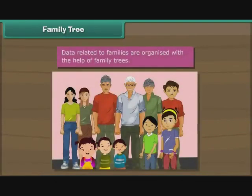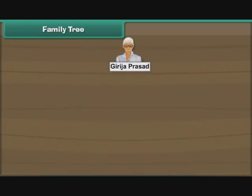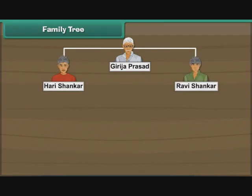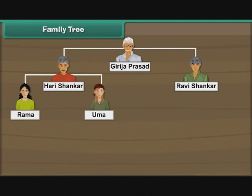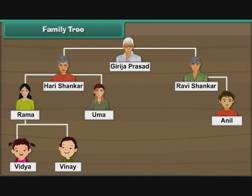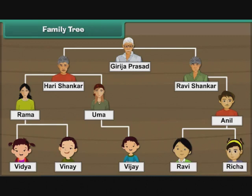Family tree. Data related to families are organized with the help of family trees. Ravi lives in a joint family. The eldest member in the family is Ravi's great-grandfather, Girija Prasad. He has two sons, Hari Shankar and Ravi Shankar. Hari Shankar has two daughters, Rama and Uma. Ravi Shankar has one son, Anil. Rama has a daughter, Vidya, and a son, Vinay, while Uma has a son, Vijay. Anil has a son, Ravi, and a daughter, Richa. The family tree of Ravi's joint family is now complete.